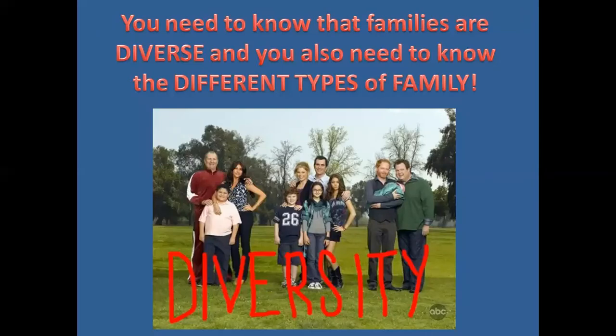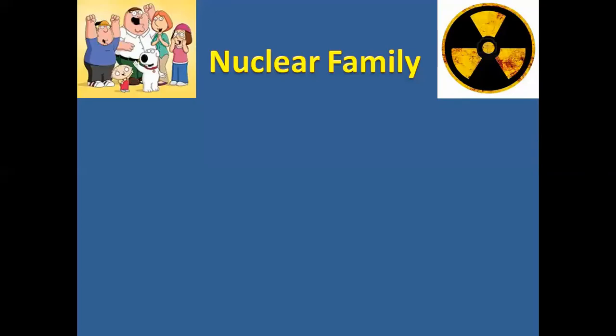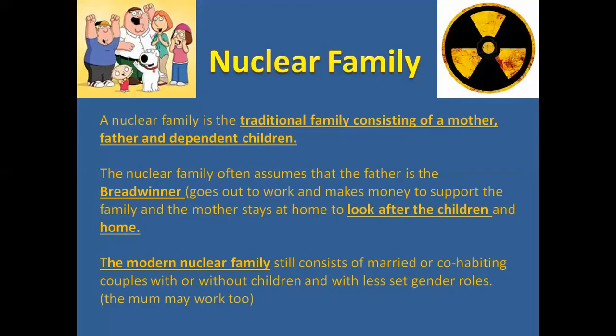Now we're on to the different types of family found in society today. The society we live in is incredibly diverse, so it's important to realise there are lots of different ways to do family. Our first type is the nuclear family — the traditional family consisting of a mum, a dad, and dependent children. Think of Family Guy or The Simpsons as a perfect example of a nuclear family.